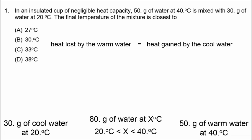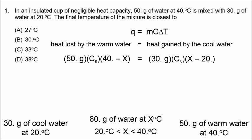We're going to use the equation Q equals MC delta T. The heat lost by the warm water equals its mass — 50 grams — times the specific heat of water, times the delta T, which is 40 minus X. The delta T for the cool water is going to be X minus 20, and there was 30 grams of cool water.